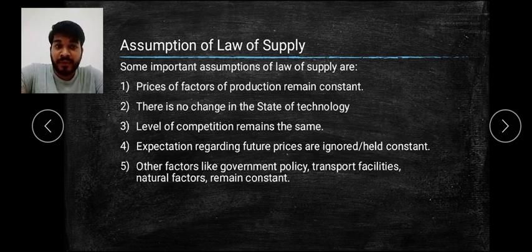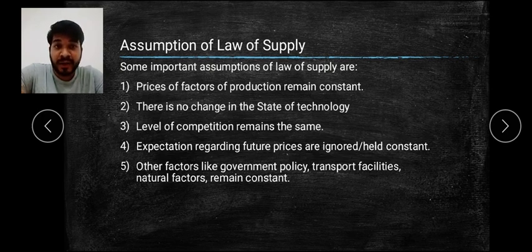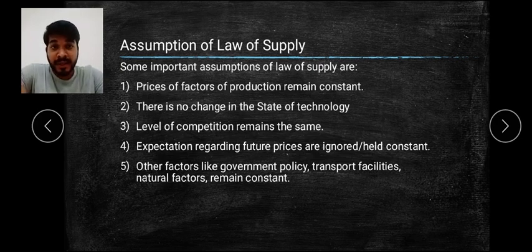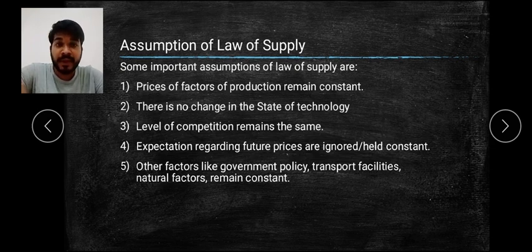Fourth, expectation regarding future prices are ignored or held constant — you should not estimate that in future the particular price will fall or increase. Lastly, other factors like government policies, transport facilities, natural factors, and disasters should not come into play; they should remain the same. When all these factors are constant, then only the Law of Supply can be working.